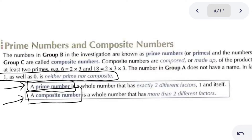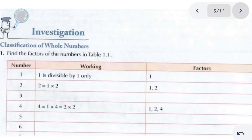There are some numbers such as 1 and 0 which are neither prime nor composite. The important thing to remember is: if a number has exactly two factors it is prime, and if it has more than two factors it is composite.